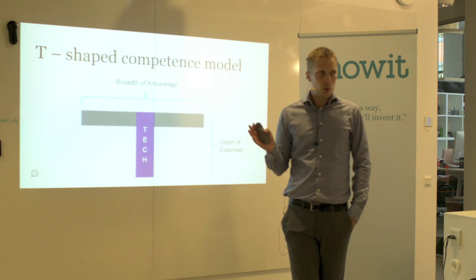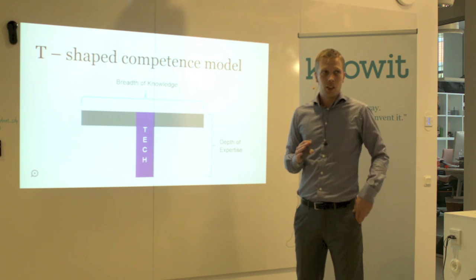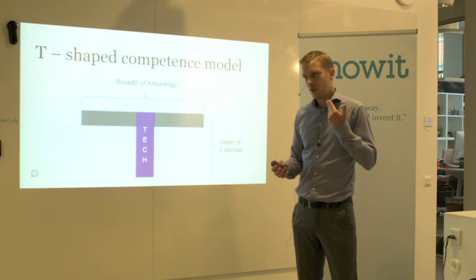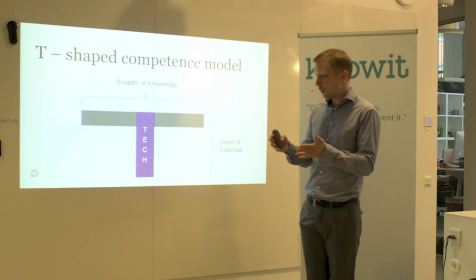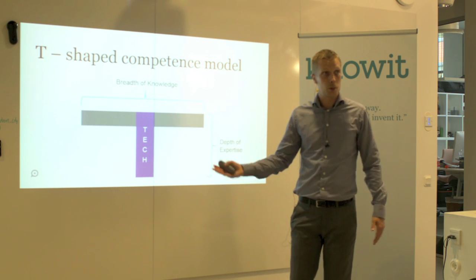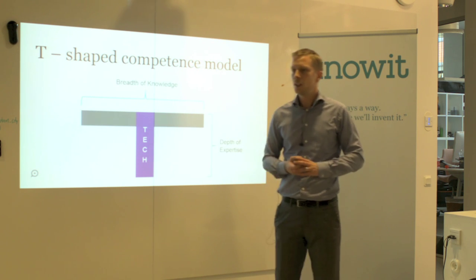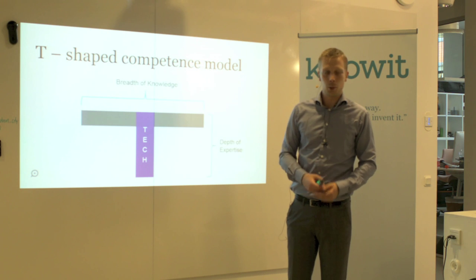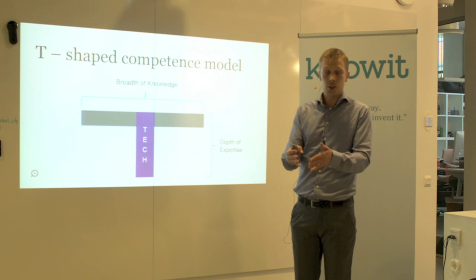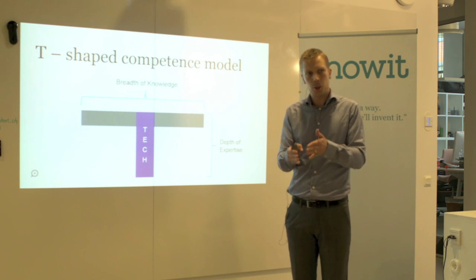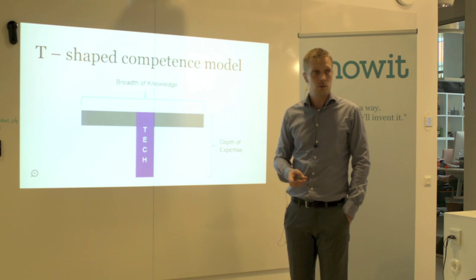Has anyone here heard about the T-shaped competence model? It's a model that visualizes the importance of having a breadth of knowledge — within testing, for example, being skilled at finding bugs, writing defect reports, and so on. But then you should also have a depth of expertise where you focus your skills in one particular area, for example test automation.